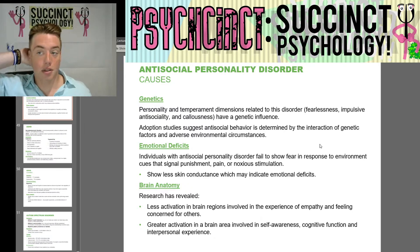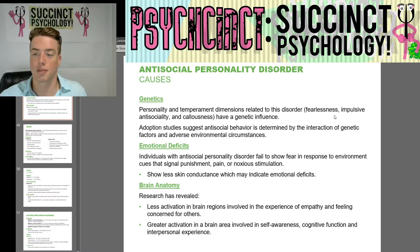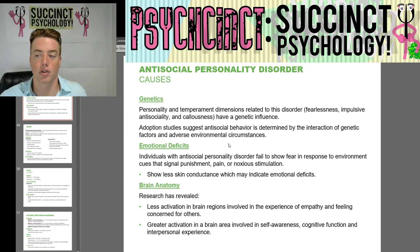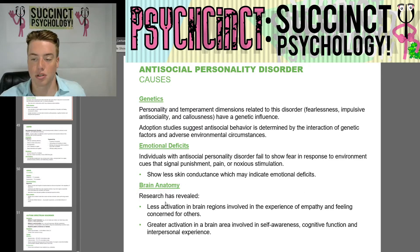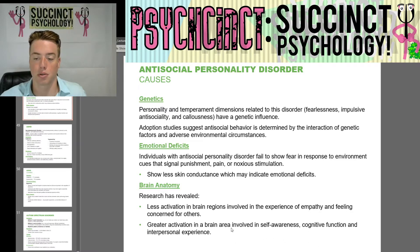Antisocial personality disorder causes: genetics — personality and temperament dimensions related to this disorder, including fearlessness, impulsivity, antisociality, and callousness, have a genetic influence. Adoption studies suggest antisocial behavior is determined by the interaction of genetic factors and adverse environmental circumstances. Emotional deficits: individuals with antisocial personality disorder fail to show fear in response to environmental cues that signal punishment, pain, or noxious stimulation, and show less skin conductance, indicating emotional deficits. Brain anatomy: research reveals less activation in brain regions involved in the experience of empathy and feeling concern for others, and greater activation in the brain area involved in self-awareness, cognitive function, and intrapersonal experience.